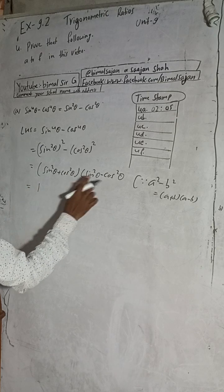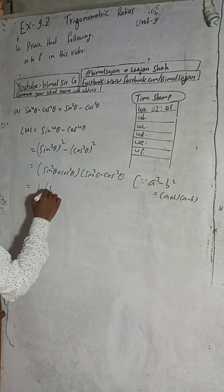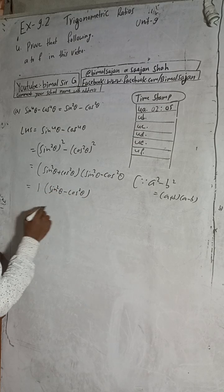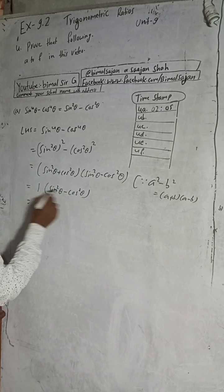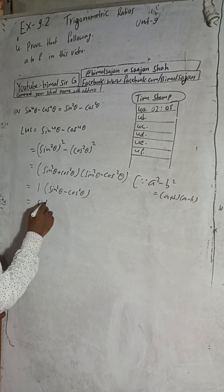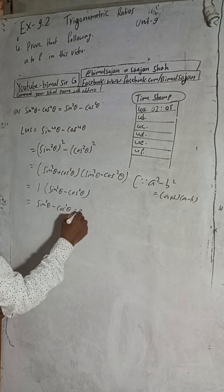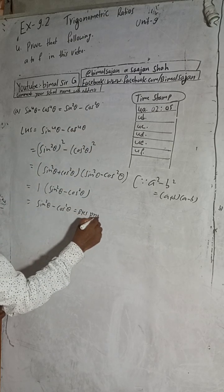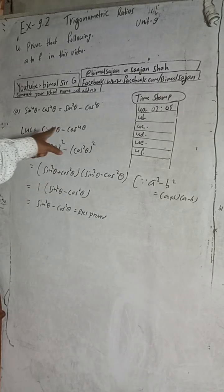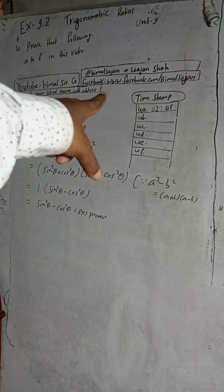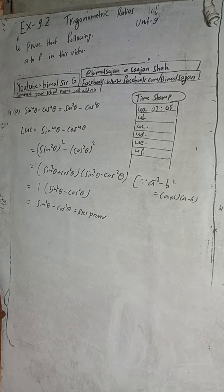So we get 1 × (sin²θ − cos²θ) = sin²θ − cos²θ. This is the solution of question 4a. The timestamp is 2 minutes 5 seconds — click that to jump to this question. I will now pause the video and write question 4b.